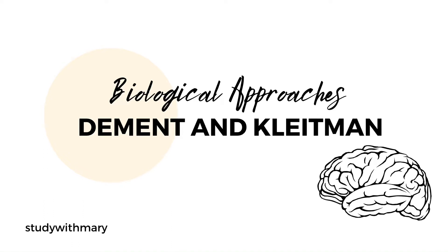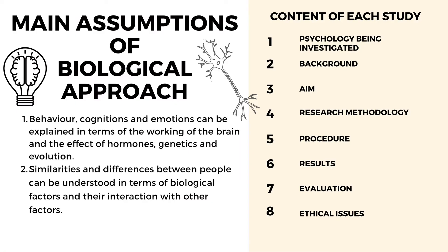Today we are going to do biological approaches from the Cambridge AS level syllabus. Biological approaches has three main studies, the first one being by Dement and Claytman, which talks about dreams and sleep. In the Cambridge AS level syllabus there are four main approaches to learn, and each approach has its main assumptions. Cambridge requires you to learn the main assumptions of each approach, and this is questioned on the exam — you can be asked to give two main assumptions of biological approaches.